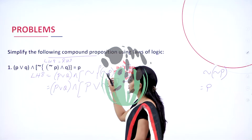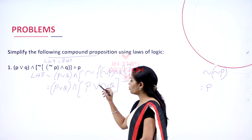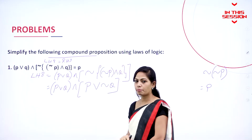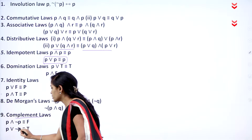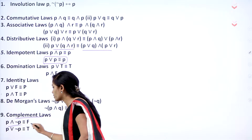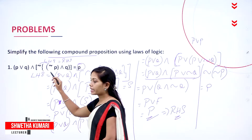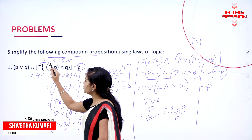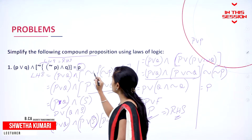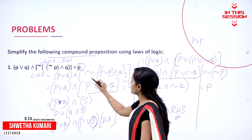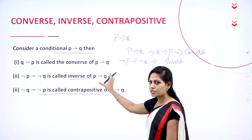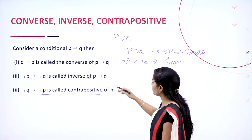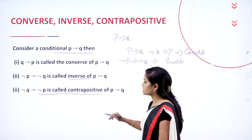In place of negation of negation P, you can write it as P. P and negation Q means you can write it as false. Negation of negation P means I can write it as P. By using this involution law, we can simplify the contrapositive.